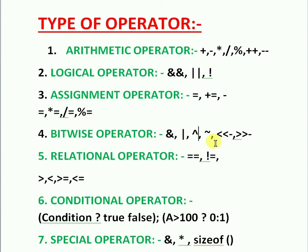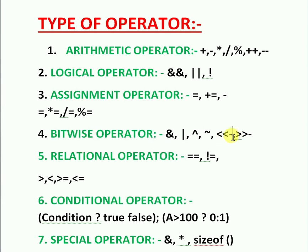Bitwise exclusive OR (^) is used for the exclusive OR operation — it converts the values of both operands into binary form and performs the exclusive OR operation bit by bit. The ones complement (~) converts the value into its complementary form. Then there is left shift (<<) and right shift (>>).